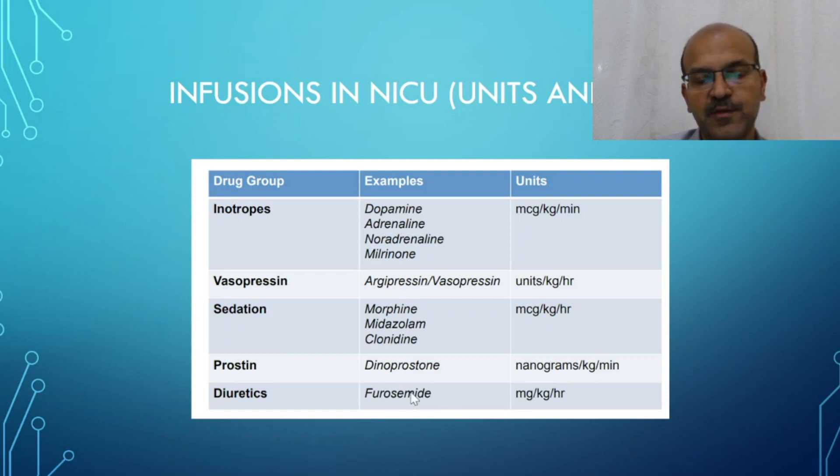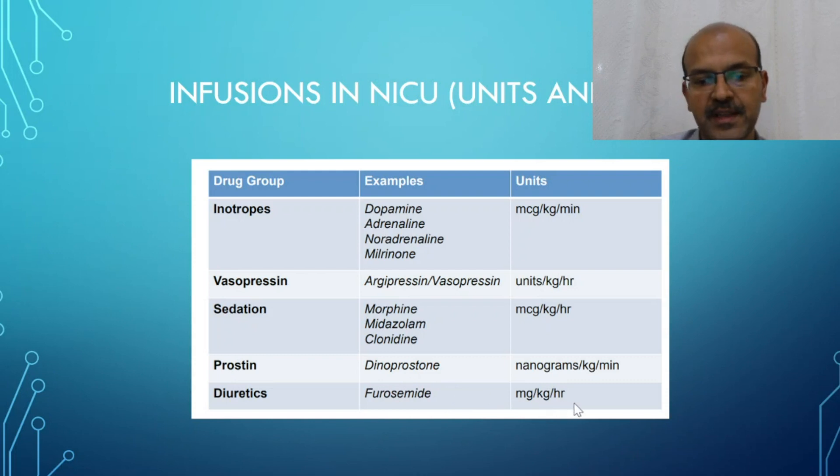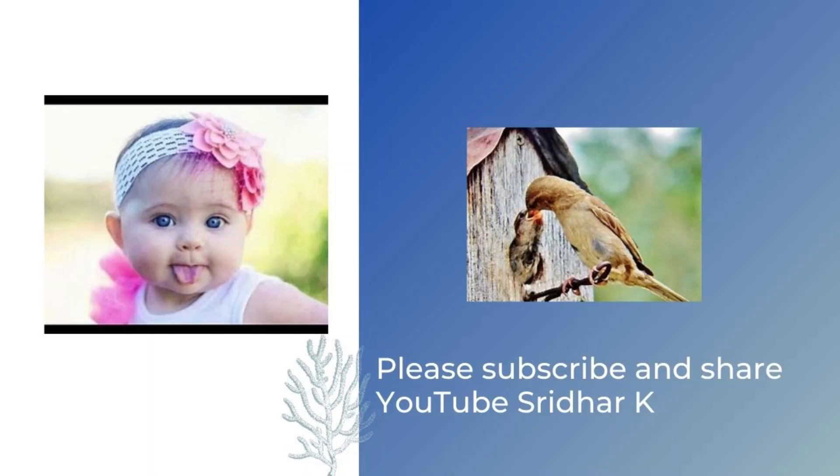Diuretics — thankfully we don't need them very often to be used as infusions, but it's in milligram per kilogram per hour.